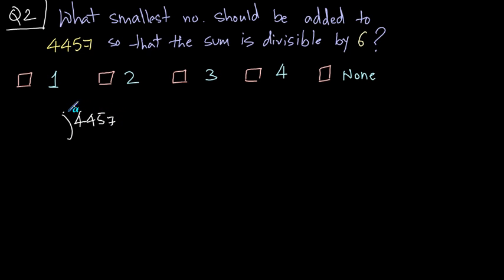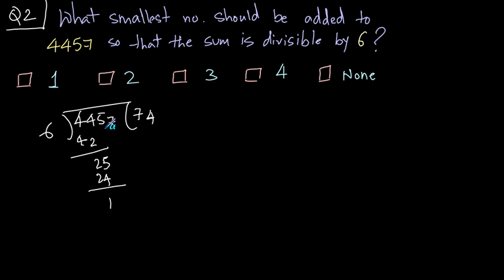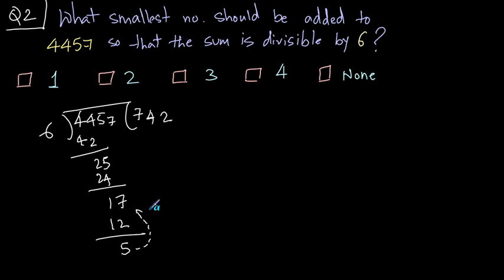Dividing 4457 by 6: 6 sevens are 42, difference is 2, bring down 5, 6 fours are 24, bring down 1, 6 twos are 12 — the remainder is 5. Now to make this number divisible you'll have to either add or subtract something. Since the question asks to add, we need to add something to reach the next multiple of six.